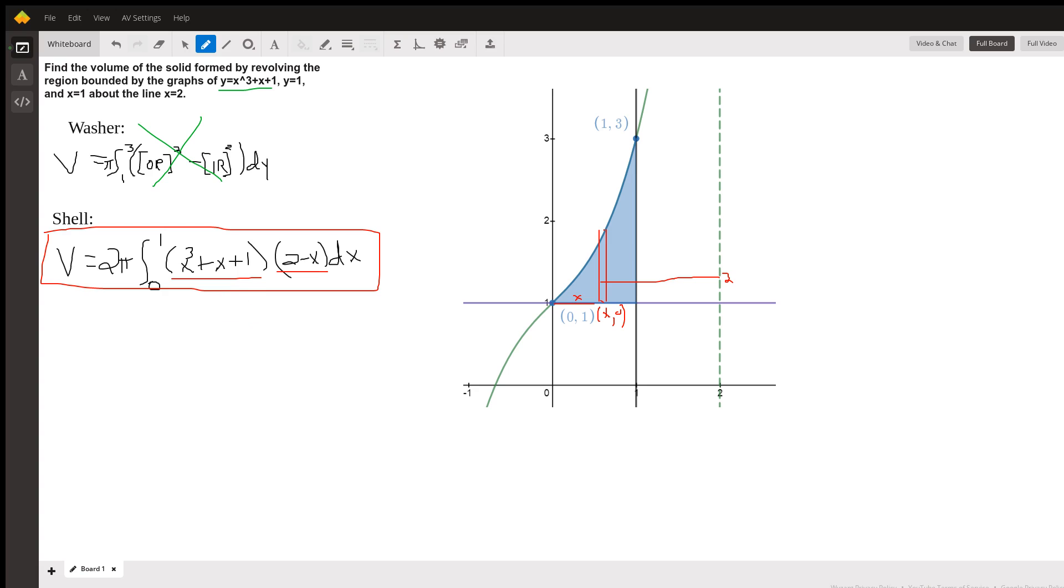And then you're going to evaluate it from 0 to 1. And finally, you're going to multiply by 2 pi. I'm not going to do that here. But I will post a Desmos graph, a link to a Desmos graph that shows you some of the work involved.